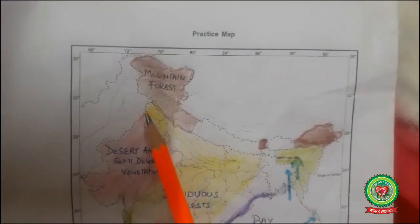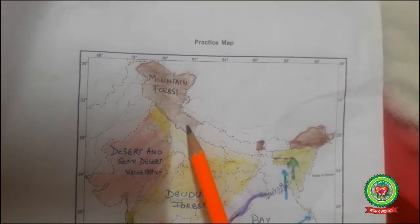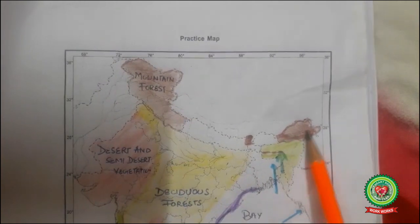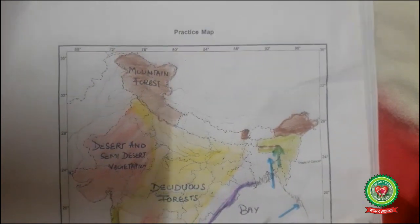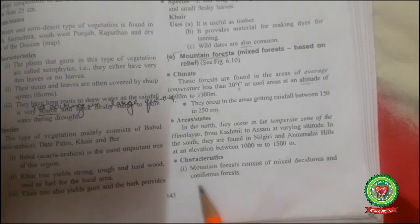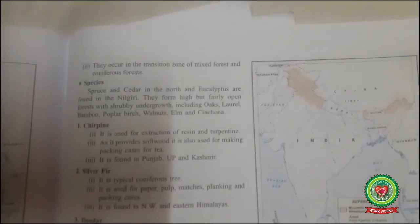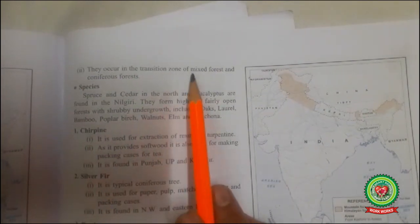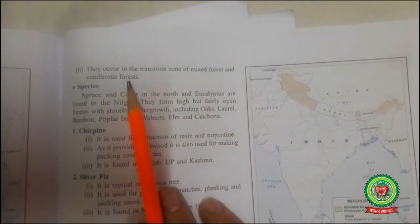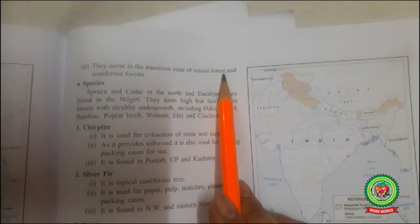If you can see this map, the states colored in brown are the states with mountain forest. Characteristics: mountain forests consist of mixed deciduous and coniferous forests. They occur in the transition zone of mixed forests and coniferous forests, where we find both coniferous, deciduous and evergreen trees.